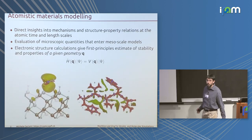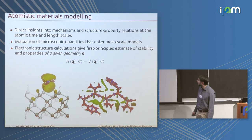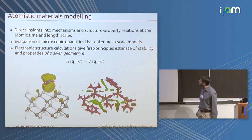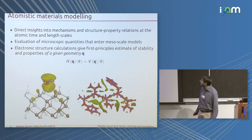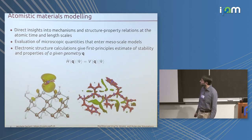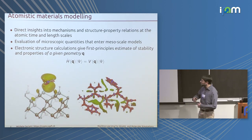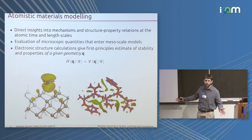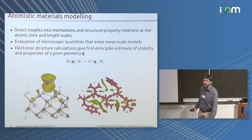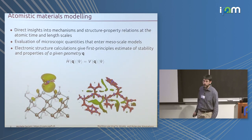These first principles correspond to solving the quantum mechanical problem of the electronic structure of your system for a given configuration of your atoms. So if you can solve this problem more or less approximately, you get all the answers about the properties of your material or molecule as accurately as you can afford to solve the Schrödinger equation.